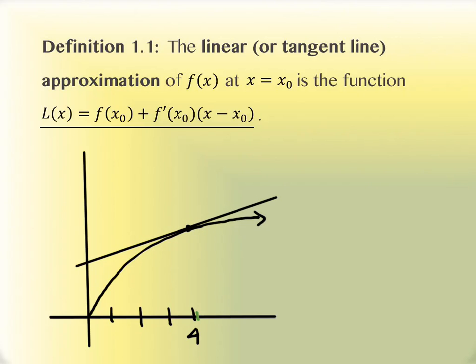If you look at the point at 4.1 on the tangent line, it's about right there in that little spot of green — it's almost the same as the location where you're actually on the curve. So this is a really good approximation, and it involves basic calculations that a four-function calculator can do: addition, subtraction, multiplication, division. It doesn't require the square root button.